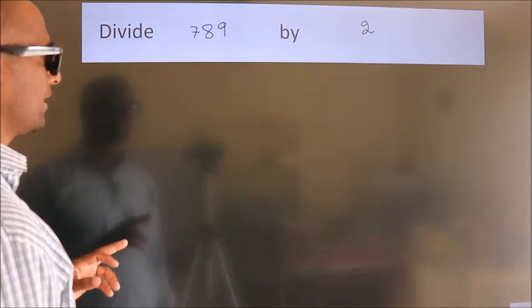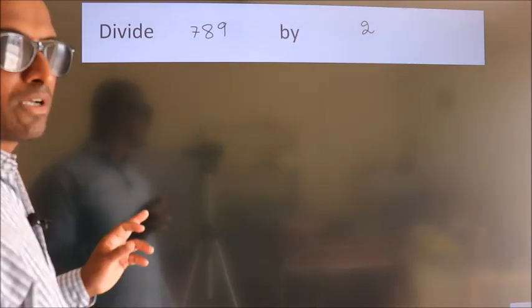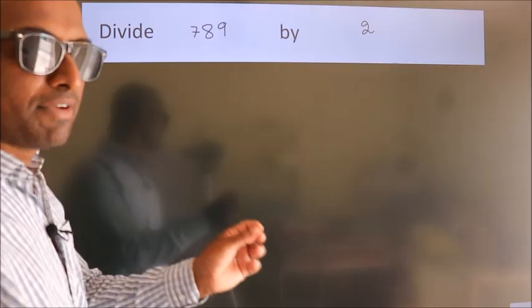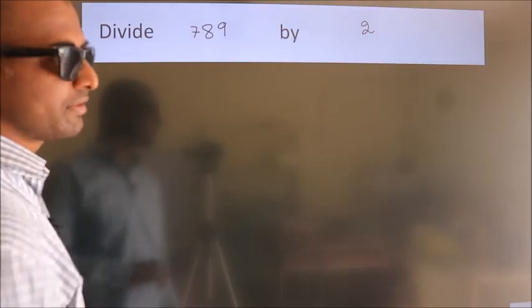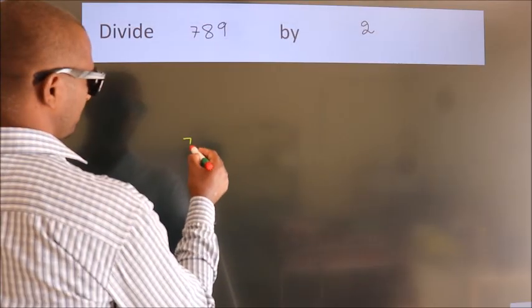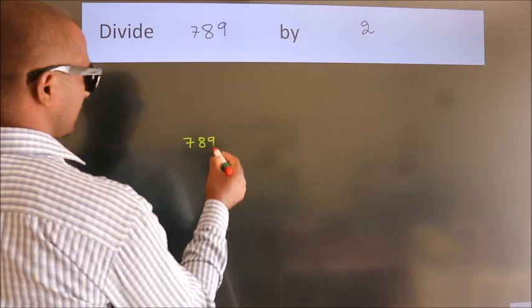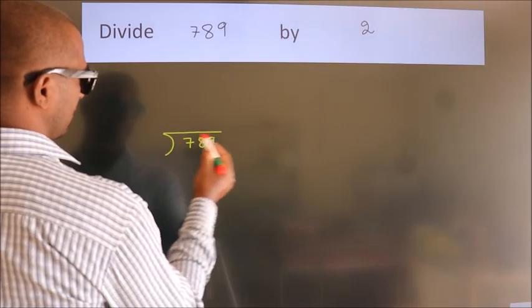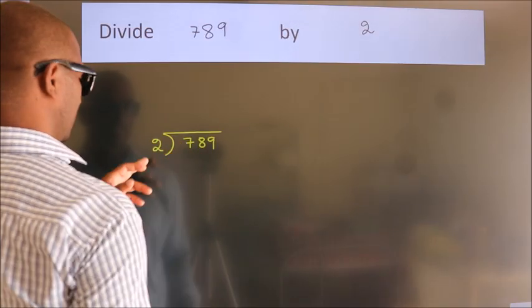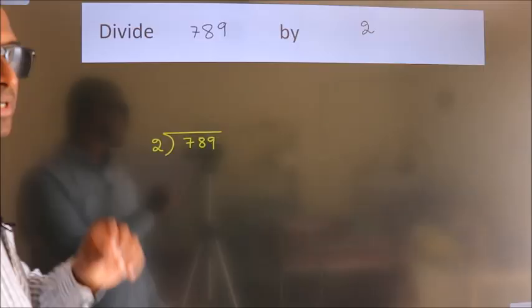Divide 789 by 2. To do this division, we should frame it in this way. 789 here, 2 here. This is your step 1.